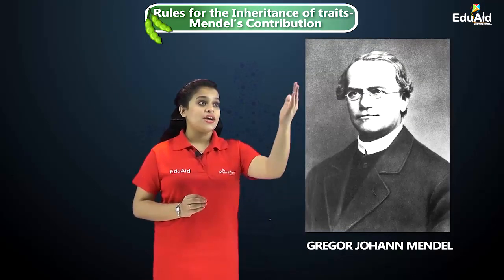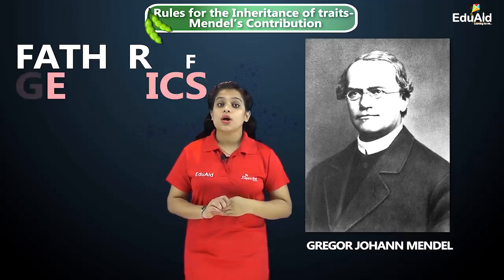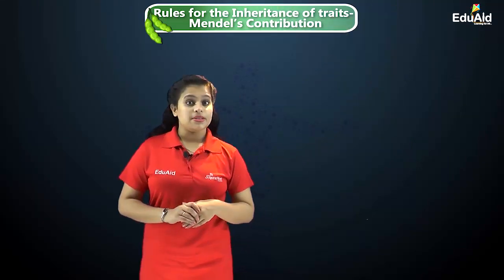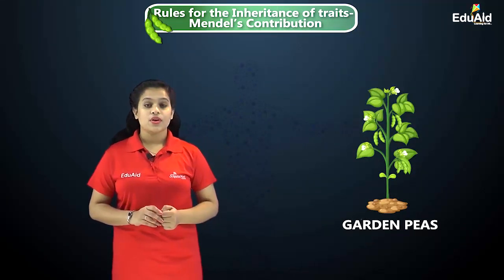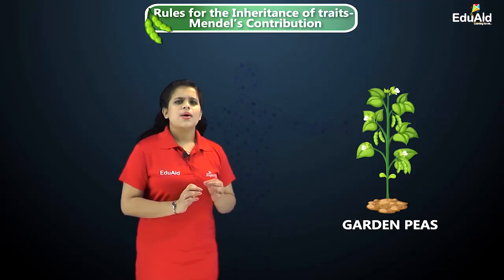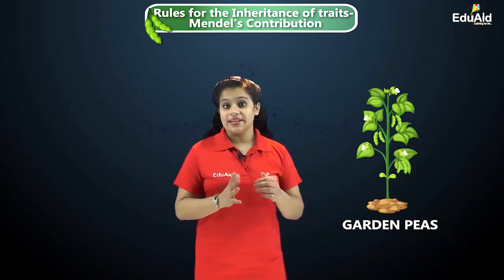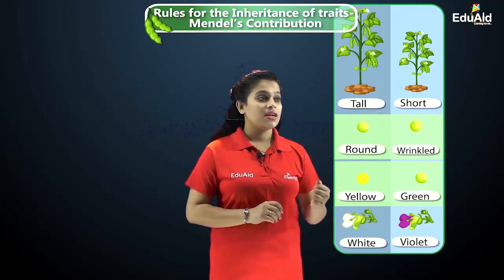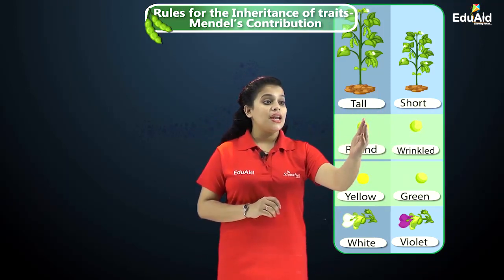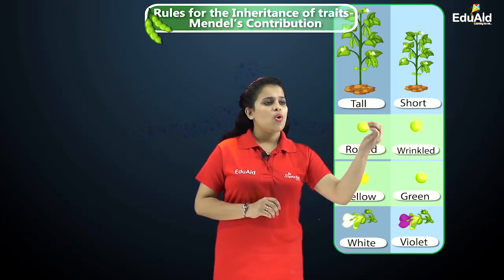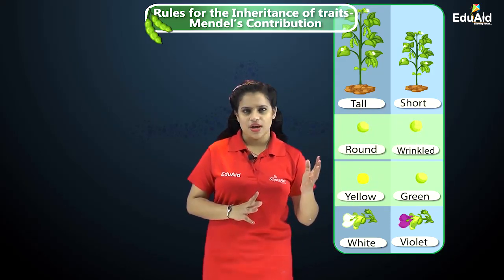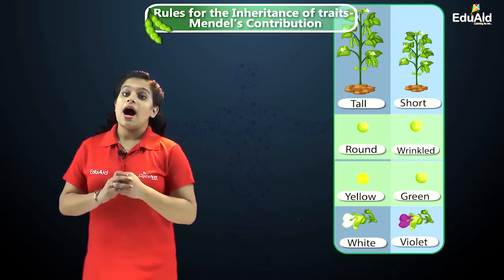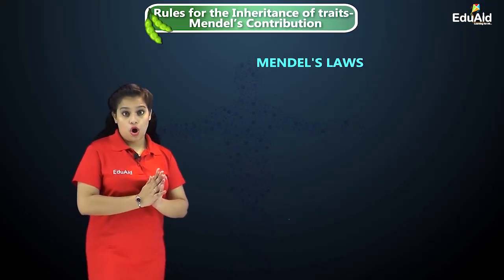All this was discovered for the first time by Gregor Johann Mendel, for which he is called the father of genetics. Mendel conducted his experiments on garden peas, choosing contrasting visible characteristics like tall and short plants, round and wrinkled seeds, yellow and green seeds, white and purple colored flowers, and produced progeny by crossing them. After his experiments, he put forward laws.